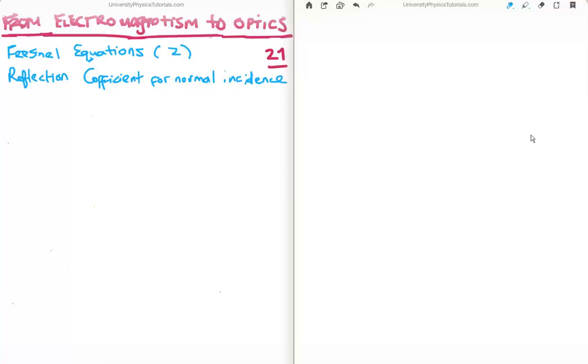In this video I'm going to continue with my tutorials bringing us from electromagnetism to optics. This is video number 21, or video 2 in the subsection on Fresnel equations. In particular, I'm going to discuss the reflection and transmission coefficients for normal incidence.